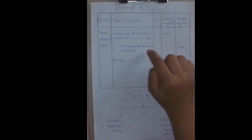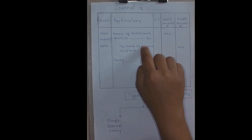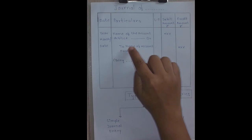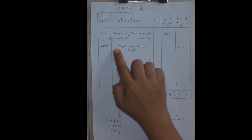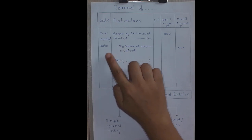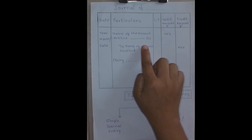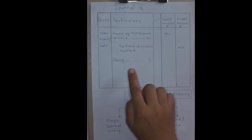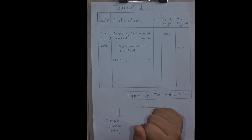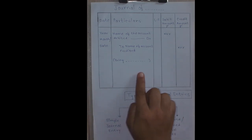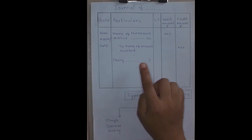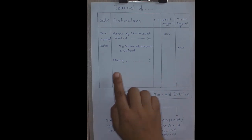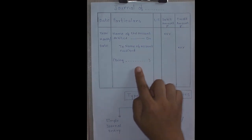The account to be credited is written on the next line beginning with the word 'to', after leaving a short space just near the date column — we can see here there is a space just near the date column — starting with 'to', we are writing the credit side. Narration is to be given for the particular journal entry. Narration is a brief explanation of the journal entry, written in brackets starting with the word 'being'.